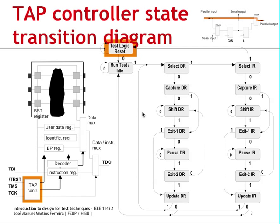This is the main slide in this presentation. Notice that the state diagram for the state machine corresponding to the test access port controller comprises two main paths: one related to instruction register scan operations, where bit streams are shifted through the instruction register path, and the other corresponding to data register scan operations, where bit streams go through the selected data register.